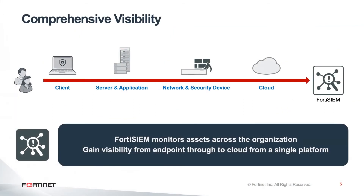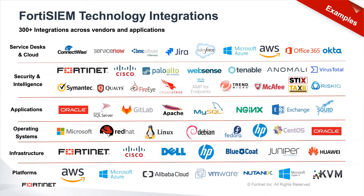FortiSIEM provides comprehensive visibility, everything from the workstation all the way up to the cloud. We're able to monitor workstations, users' interactions with them, servers, network devices, and up to the cloud. FortiSIEM supports hundreds of different integrations from different vendors and can run on different platforms such as VMware or AWS. From an infrastructure perspective, we can monitor the operating systems, applications, and security intelligence, and integrate with things like service desks or Office 365 as well.